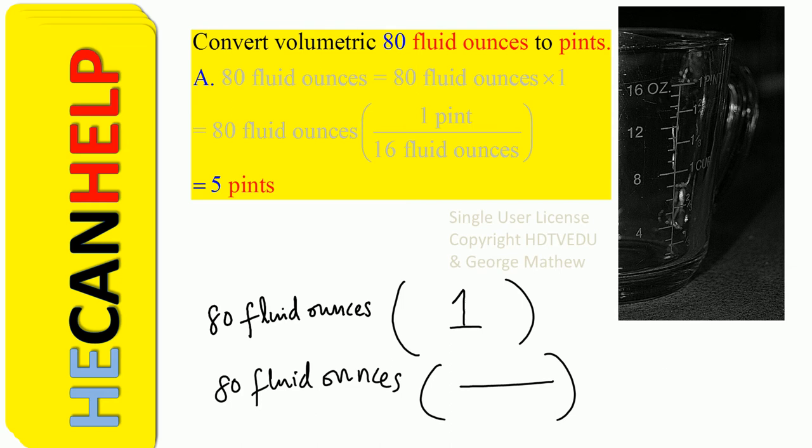For the ounces to cancel out, we know that 1 pint is equal to 16 ounces. We have the option of putting 16 ounces at the bottom or at the top. We put it at the bottom so that ounces and ounces cancel out.